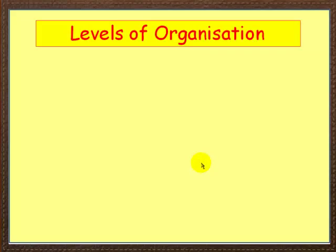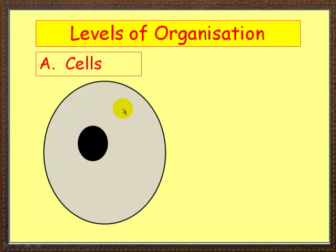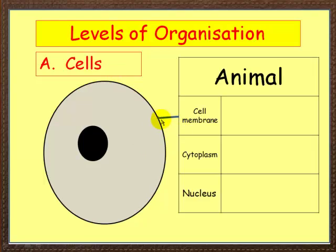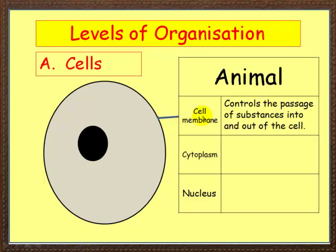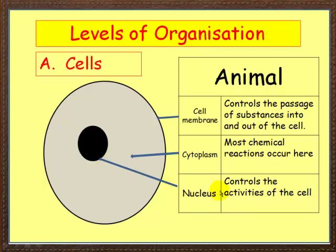In terms of levels of organization, let's start very basic. The most basic level is the cell — let's draw a simple animal cell. On the outside we've got a cell membrane, which controls the passage of substances into and out of the cell. Inside you've got the cytoplasm, a jelly-like substance where most chemical reactions take place. And in the middle you've got the nucleus, which controls the activities of the cell.